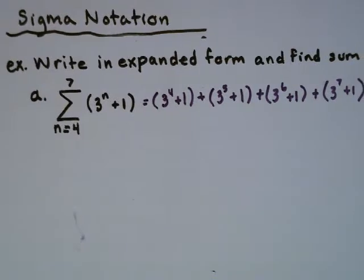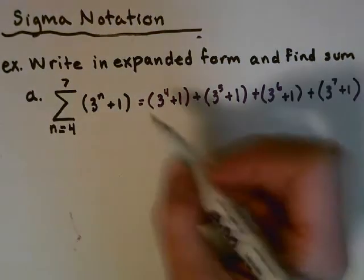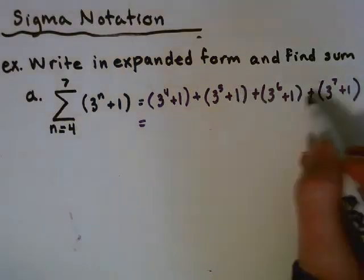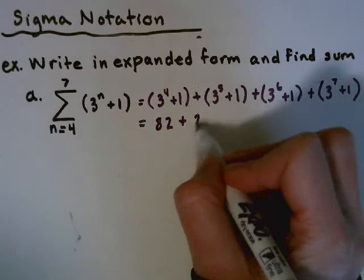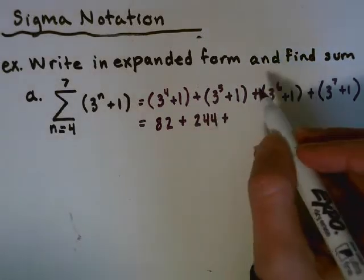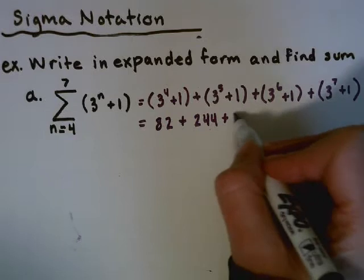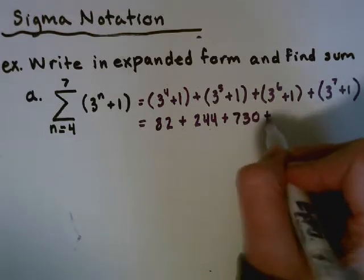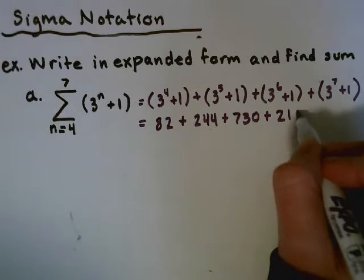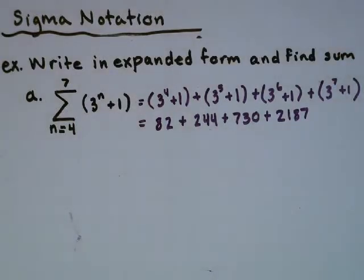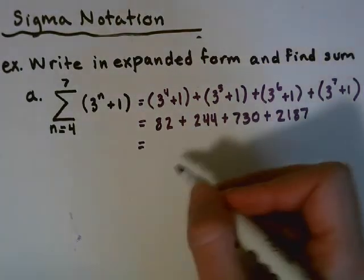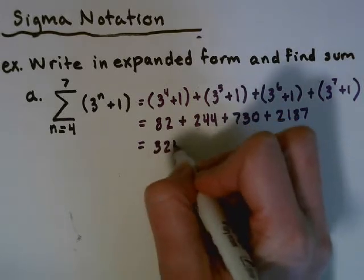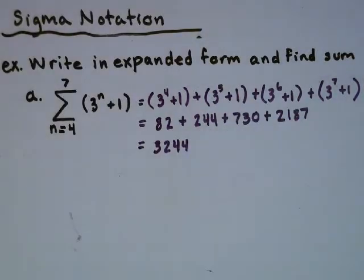We can simplify each one of these: this is going to be 82 plus 244 plus 730 plus 2187. The expanded form is either of those representations, and then the sum is adding all of those up — for this one it will be 3244.